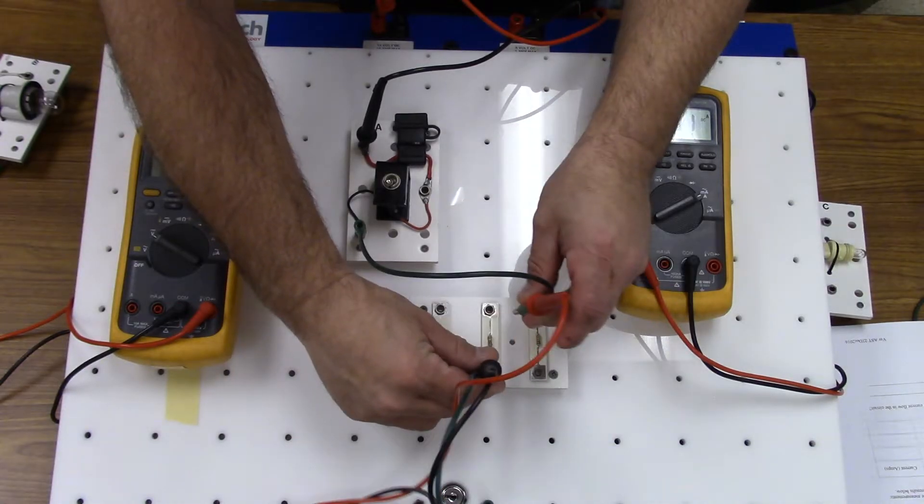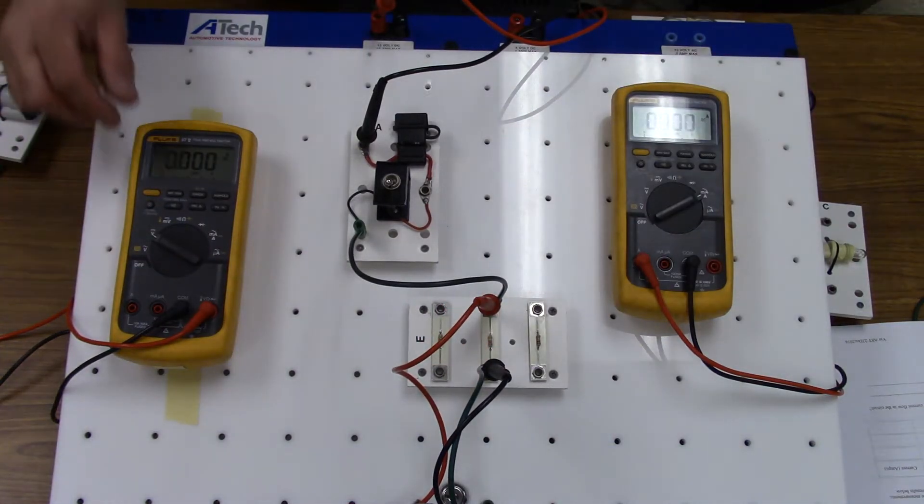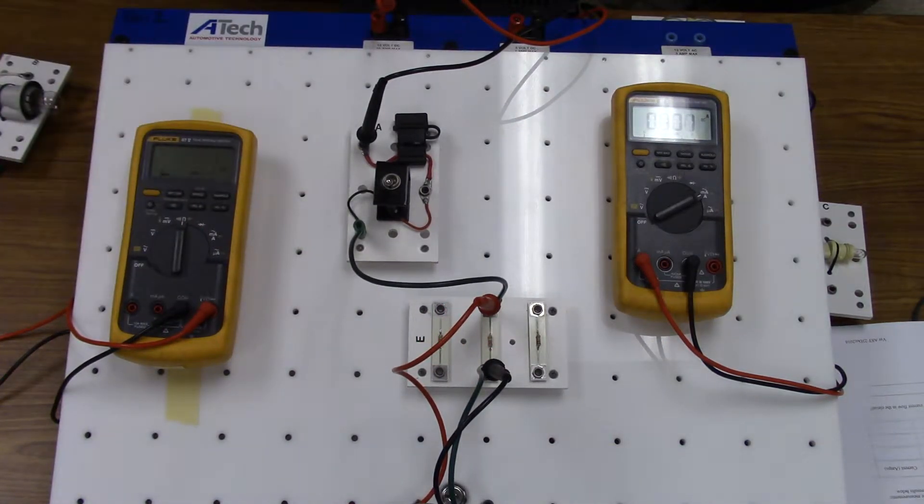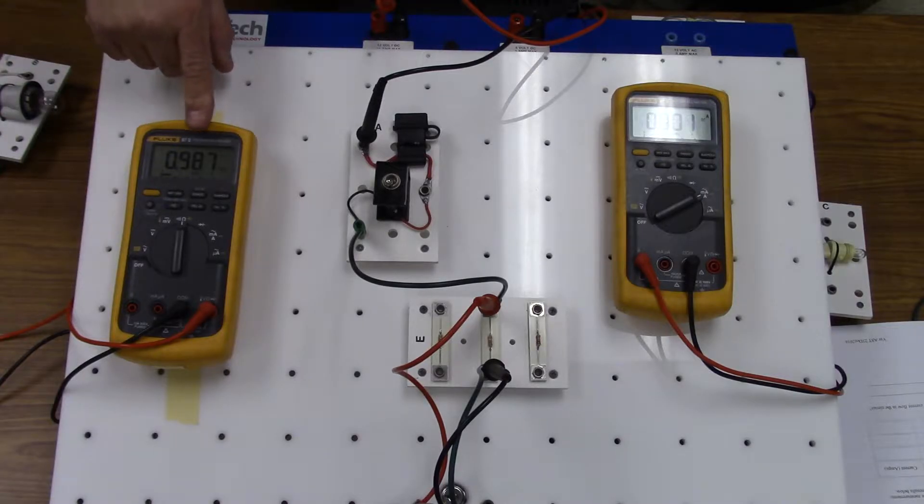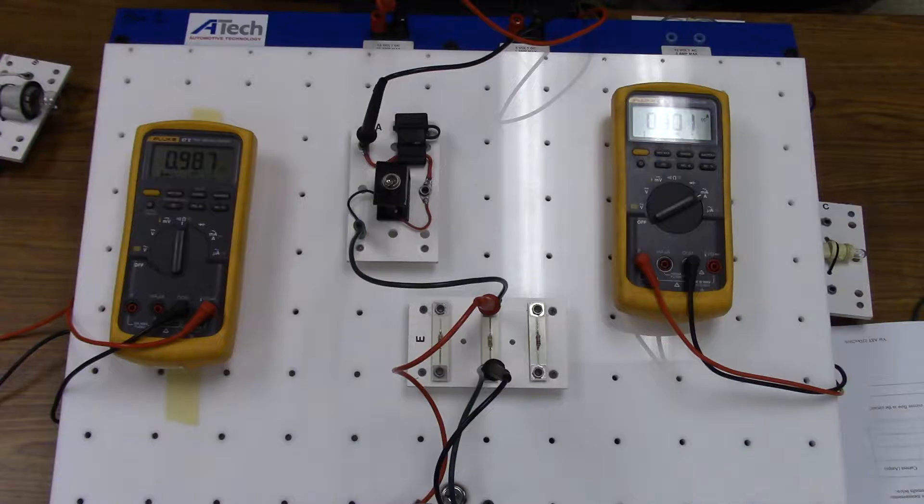I'll move to R2, R2, .987k ohms, so that's 987 ohms.